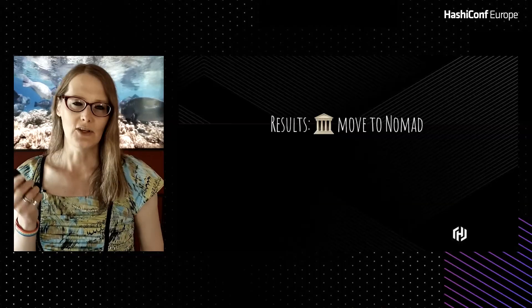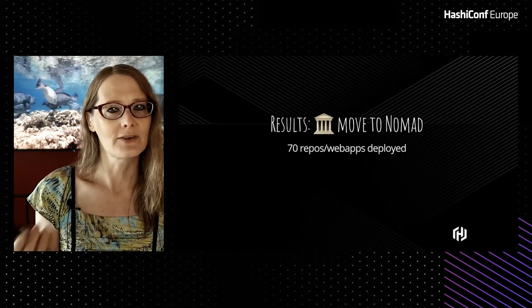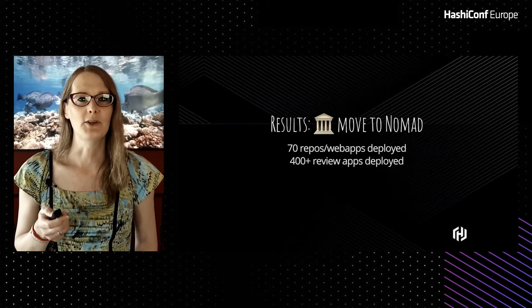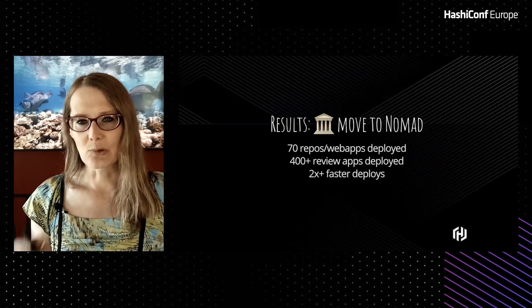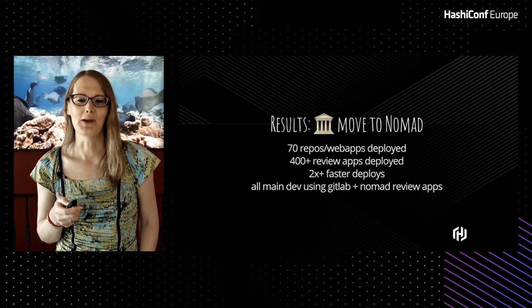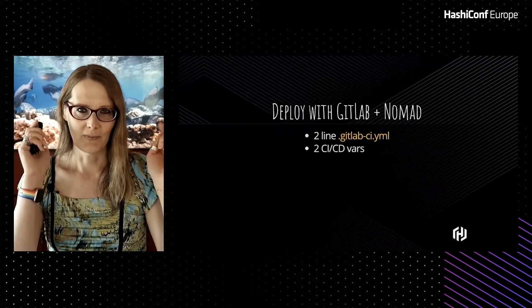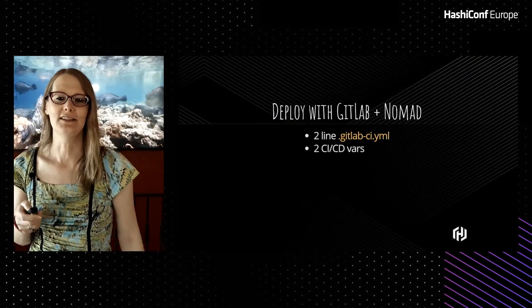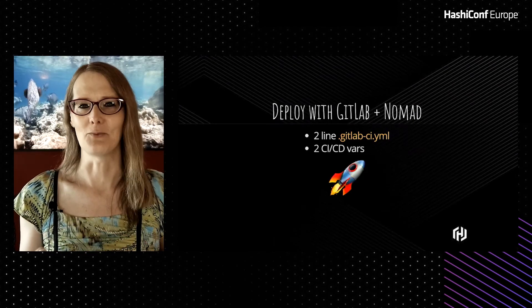Results: we moved to Nomad a little over a year ago after a stormy month with Kubernetes, and after talking with our ops people who already knew and loved Consul. Since moving, we've moved over 70 repos for web apps. Over 400 review apps have been deployed. Our deployments are now twice as fast, and all of our main development is using GitLab and Nomad review apps. Takeaway: deploy with GitLab and Nomad — two-line .gitlab-ci.yml, two CI/CD variables. That's it. You'll be off to the rocket races.